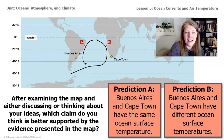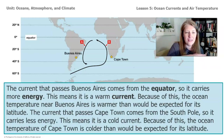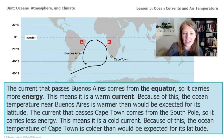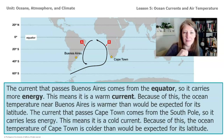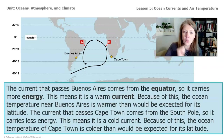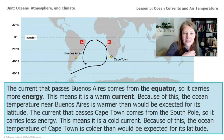The current that passes Buenos Aires comes from the equator, so it carries more energy — that means there's a warm current there. Because of this, the ocean temperature near Buenos Aires is actually warmer than you'd expect for a location at that latitude. Cape Town is the opposite: the current originates at the south pole, carries less energy, and the water there is colder than you would expect for its latitude.